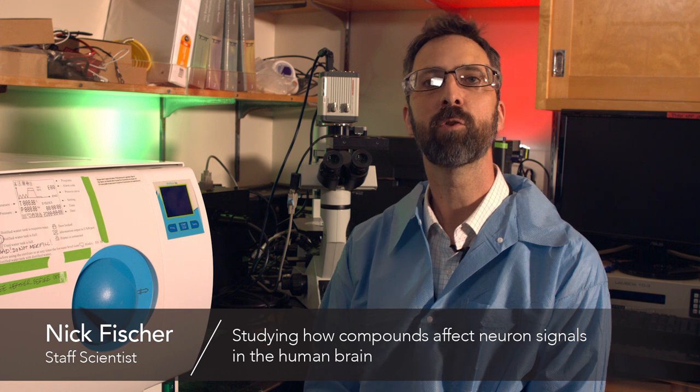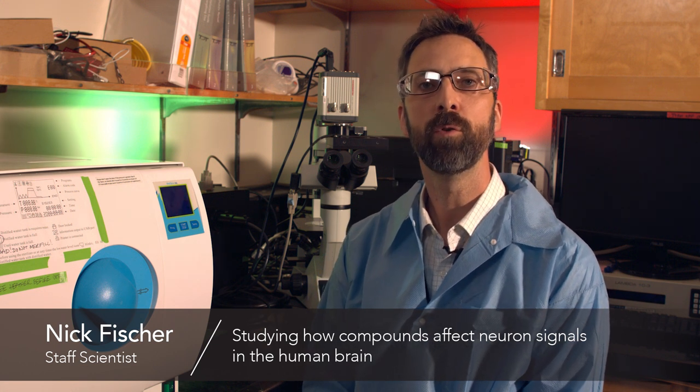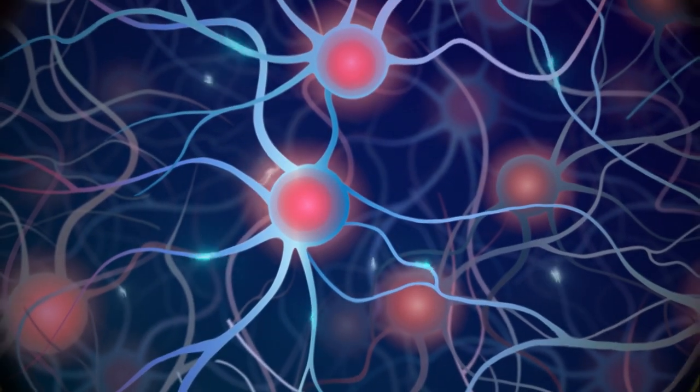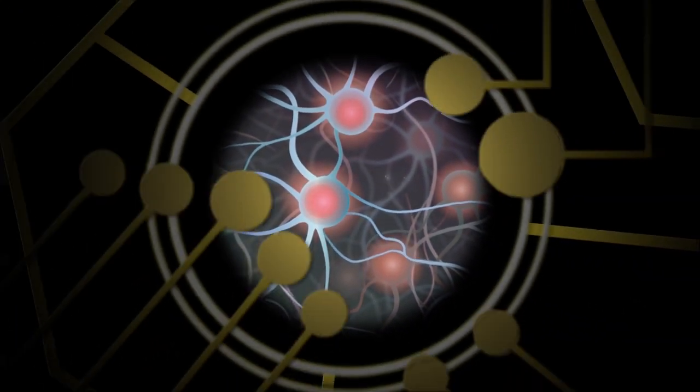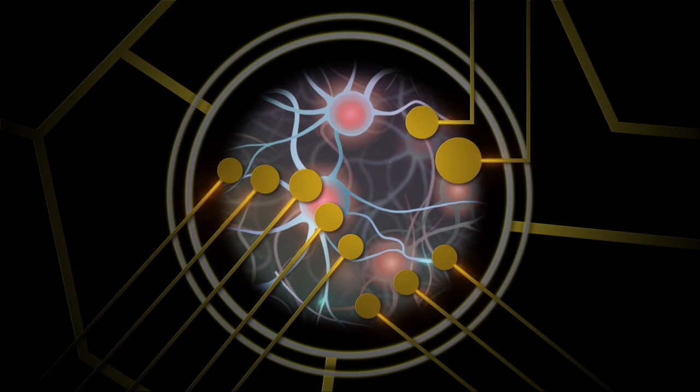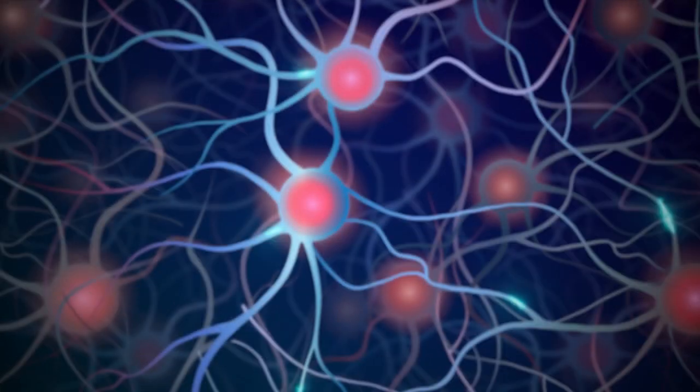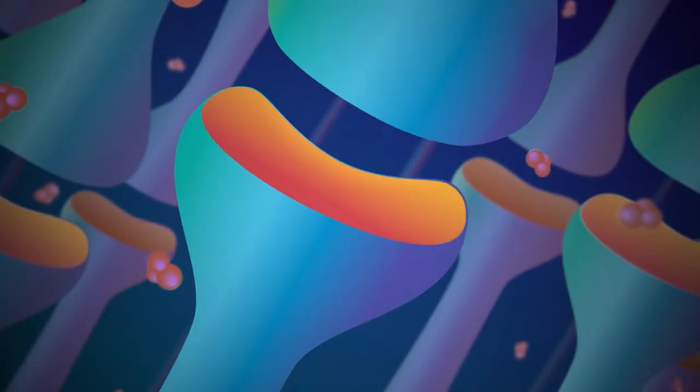The brain on a chip is an integrated experimental platform whereby we have neurons and brain cells that are in a recording device which incorporates micro electrodes. The micro electrodes in our devices pick up the signals that are being generated by the neurons. When the neurons communicate with one another they evoke small electrical signals that are picked up by these micro electrodes. These micro electrodes allow us to listen in on the conversation of the neurons. If we then add a chemical compound or a therapeutic, how does that compound affect how these neurons talk to one another and understanding how they talk to one another and how that's disrupted, especially in the context of human cells, allows us to develop better countermeasures and better therapeutics.